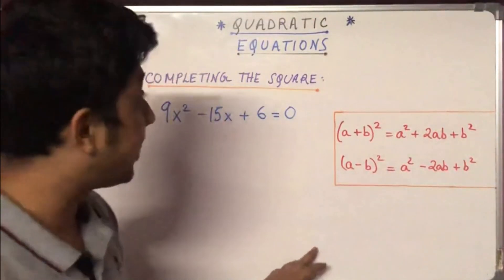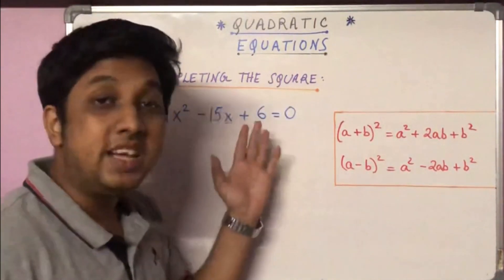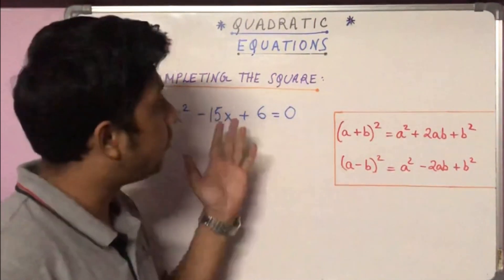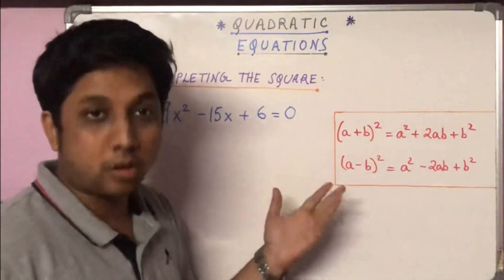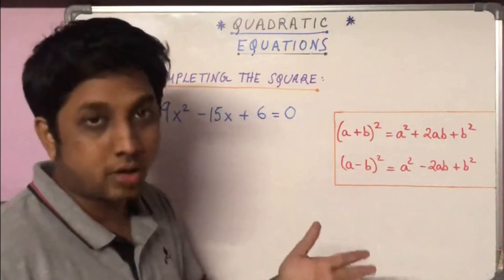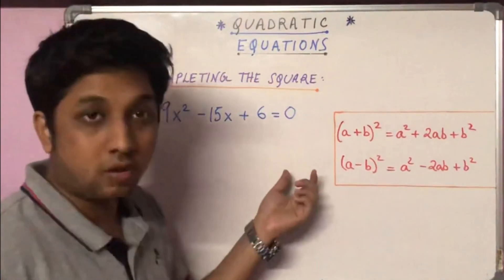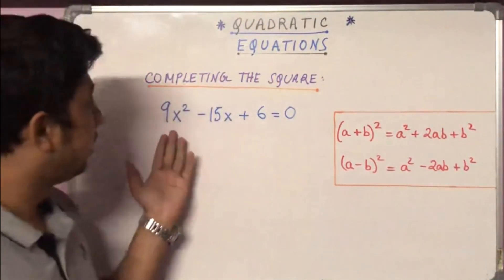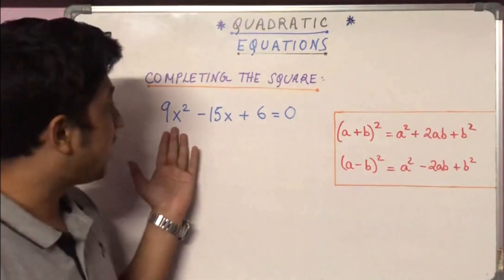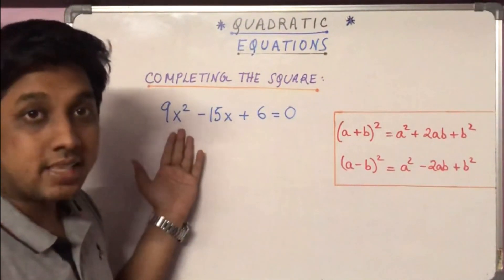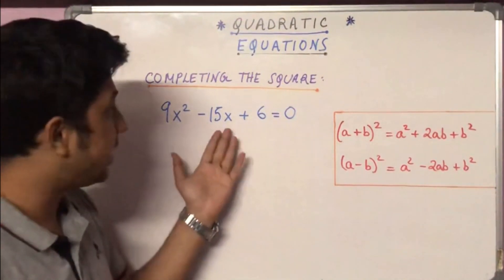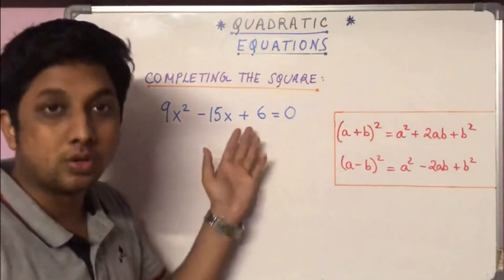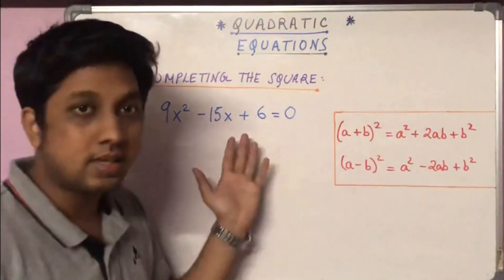In this video we discuss how to solve quadratic equations using the completing the square method. Completing the square is an important method of solving. Let's start with the equation: 9x² - 15x + 6 = 0.